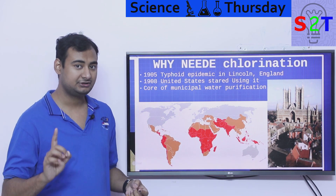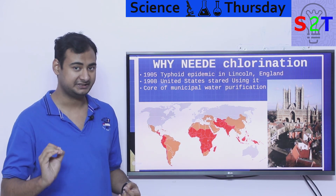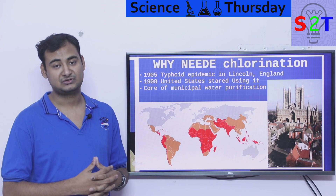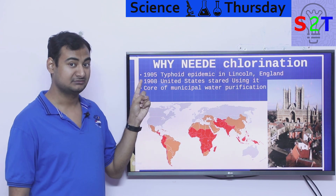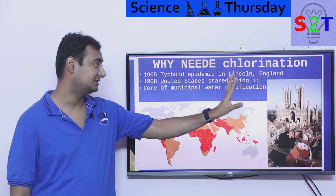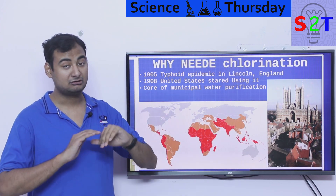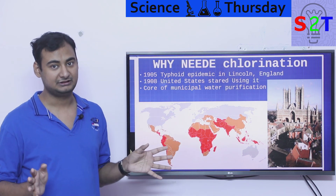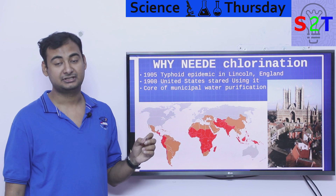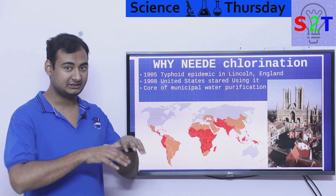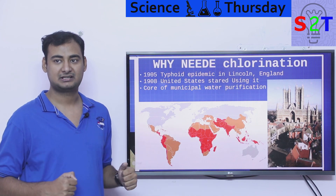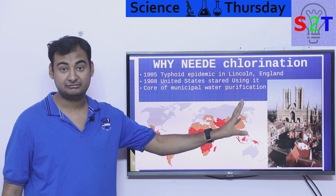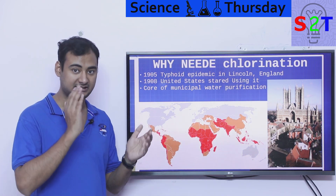Chlorination is associated with modern water treatment, and that's true, but this technology goes back over 100 years. In 1875 people started figuring it out; in 1890 some attempts were made; but in 1905 something big happened — a typhoid epidemic hit Lincoln, England. A lot of people died and they needed a quick solution, because the whole town could have been wiped out. That's when they introduced chlorine water treatment, and it stopped the epidemic. People went from dying in large numbers to being safe.